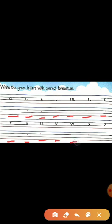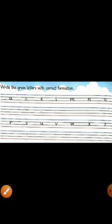And we will write here and write the correct formation of grass letters: a, c, e, i, m, n, o, r, s, u, v, w, x, z. Okay, these fourteen letters are grass letters. This is your classwork. I hope you all have done this work.